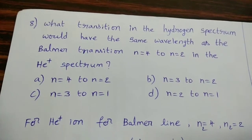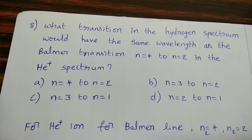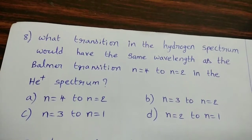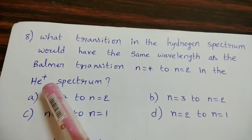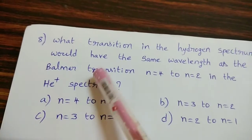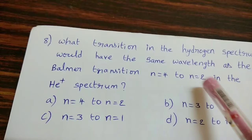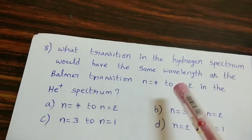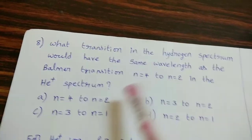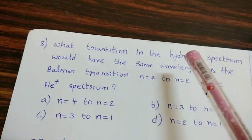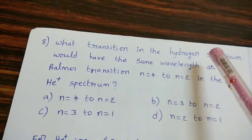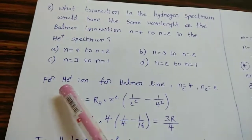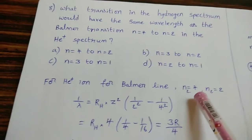What transition in the hydrogen spectrum would have the same wavelength as the Balmer transition N = 4 to N = 2 in the He+ spectrum? In the He+ spectrum for the Balmer series, transition from N = 4 to N = 2 takes place and has a certain wavelength. We need to find which transition in the hydrogen spectrum has the same wavelength. For He+ ion, N₁ = 2 and N₂ = 4.